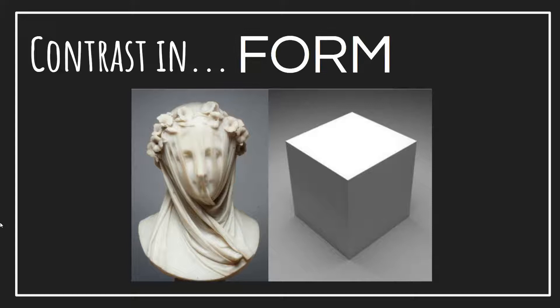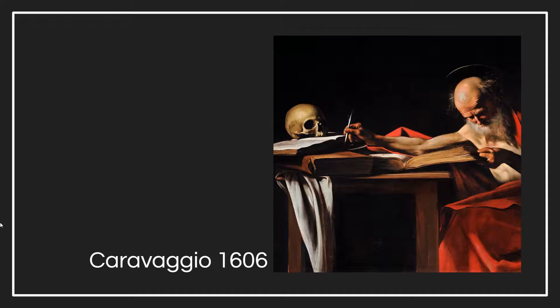Finally, we have contrast in form. It's not contrast in shape, because remember form is something that's three-dimensional — it has length, width, and height — such as this cube or this statue. And the reason they're contrasting, it's not just because one's a person and one's a cube. We're looking more at how straight and angular the cube is versus the soft and flowy lines you see in the creation of the woman with the veil. They look very different in that regard.